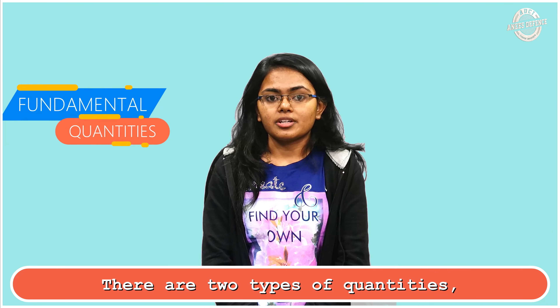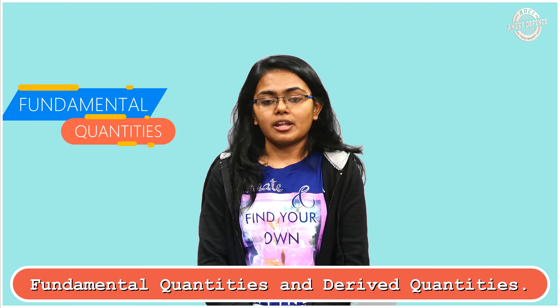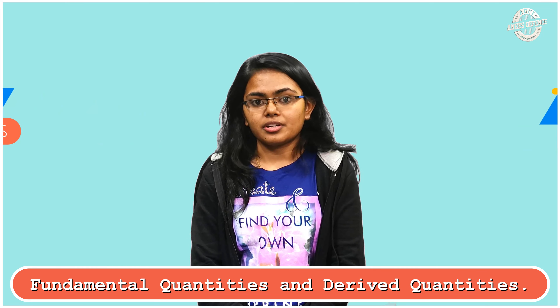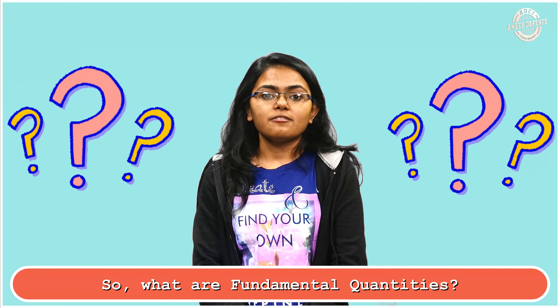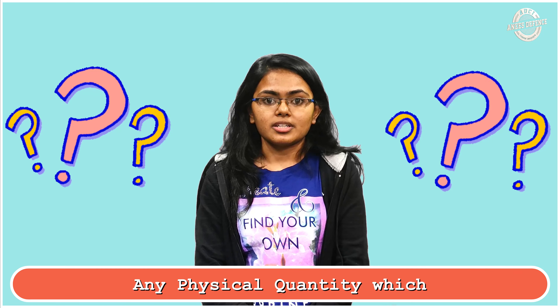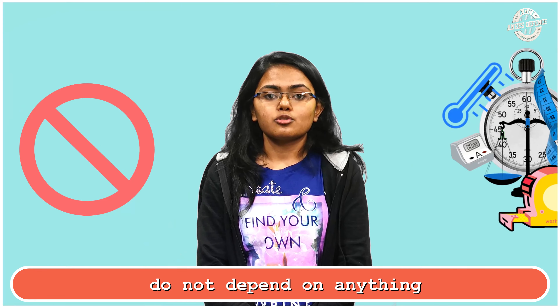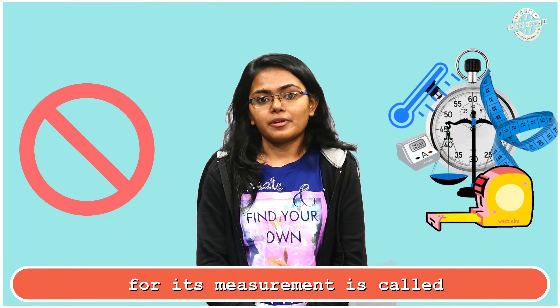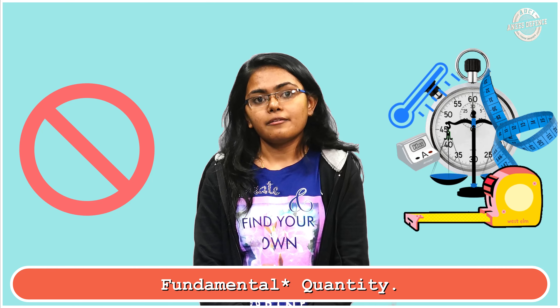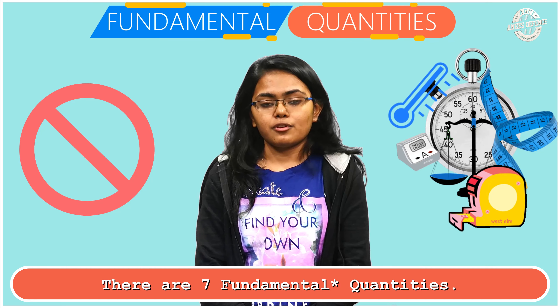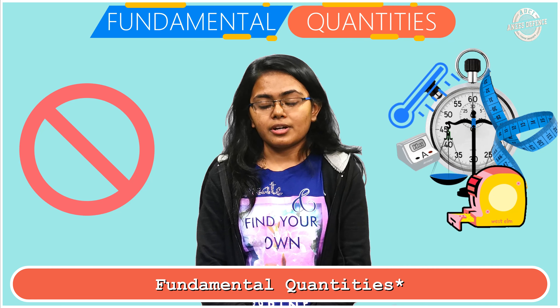There are two types of quantities: fundamental quantity and derived quantity. Any physical quantity which does not depend on anything for its measurement is called a fundamental quantity. There are seven fundamental quantities.